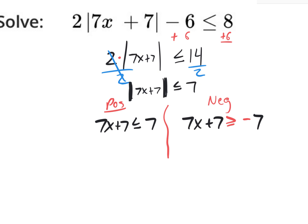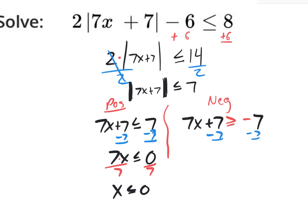Now solve both. For the positive side, subtract 7 from both sides: 7x ≤ 0. Divide by 7: x ≤ 0. For the negative side, subtract 7: 7x ≥ negative 14. Divide by 7 — you don't flip because you're not dividing by a negative. Negative 14 divided by positive 7 is negative 2, so x ≥ negative 2. Now we have our two answers.